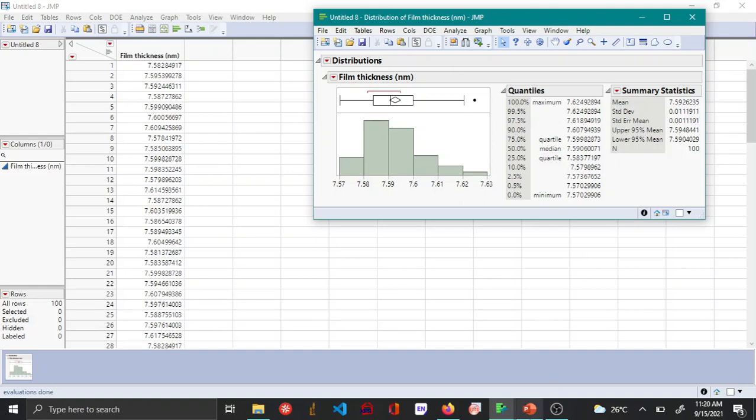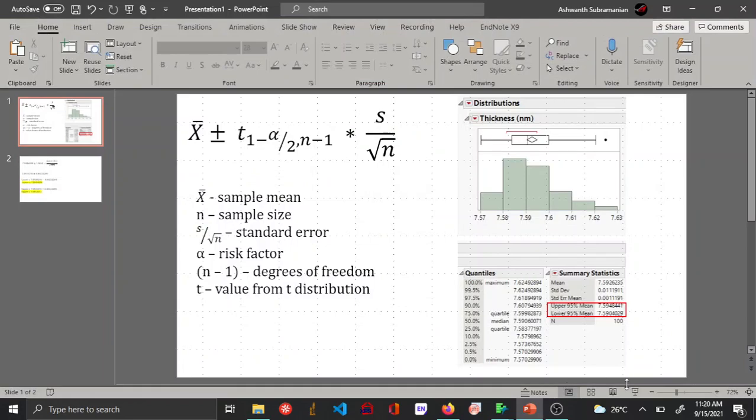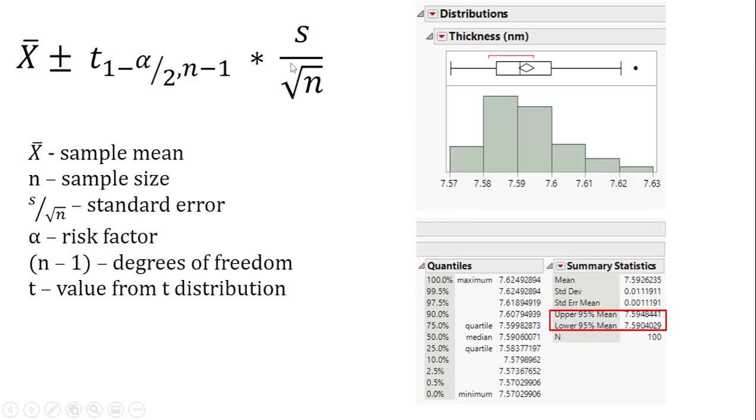Let me quickly switch over to PowerPoint to explain this. So the formula that is used to make this calculation is shown here. It is the sample mean plus or minus the t-value that is obtained from the t-distribution times the standard error.